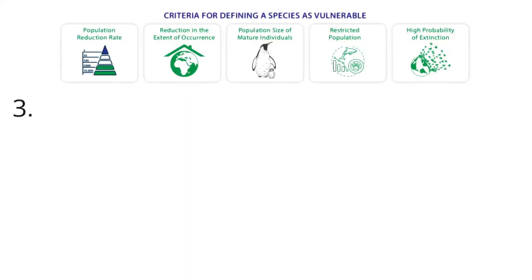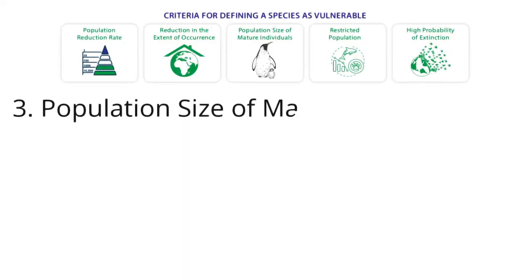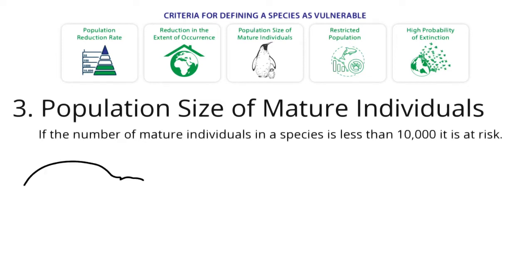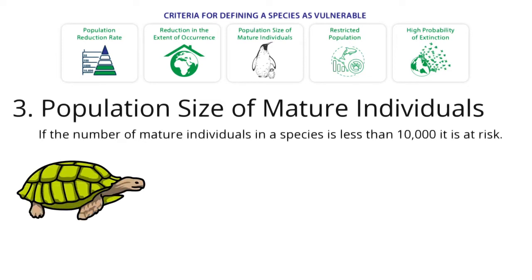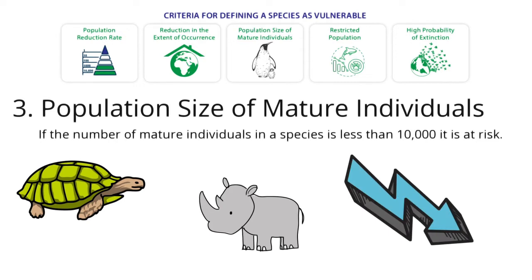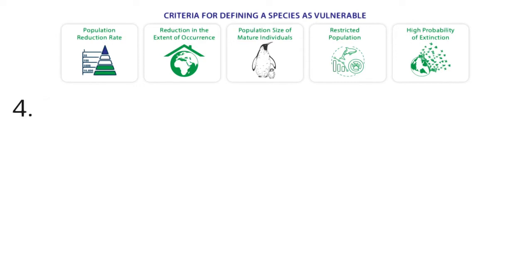3. Population Size of Mature Individuals. A species is vulnerable if the population of mature individuals is less than 10,000. A species is also vulnerable when there is a 10% or more loss in the population in 10 years. The number of mature adult animals in a habitat can fall quickly or slowly.